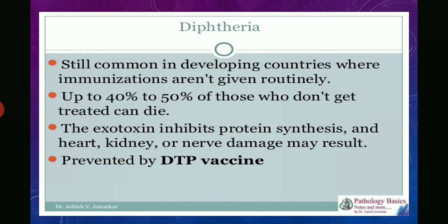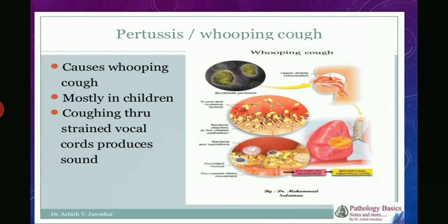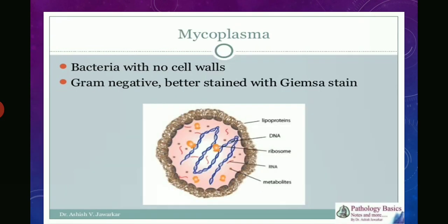Diphtheria is prevented by the DPT vaccine, which stands for diphtheria, tetanus, and pertussis. Pertussis, also known as whooping cough, occurs mostly in children and affects the vocal cords; the affected person's breathing sound will be very heavy. Mycoplasma is another bacterium that has no cell wall, is gram-negative, and is stained with Giemsa stain.